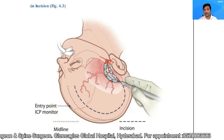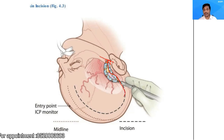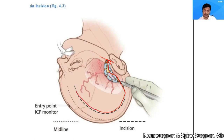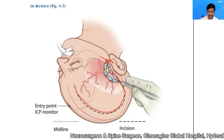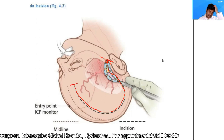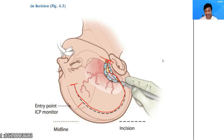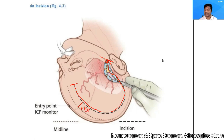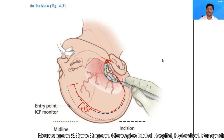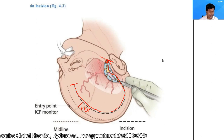I take a posterior-superior turn, go sufficiently backwards to involve the parietal eminence, and then go forward, ending at the level of the hairline. I take this incision ensuring a distance of 1 to 1.5 centimeters from the midline, though some surgeons take it to the midline. The second decision is the posterior extent of the incision.